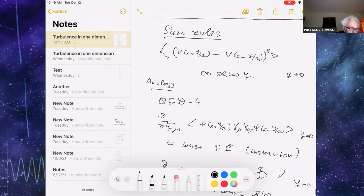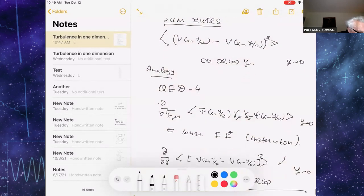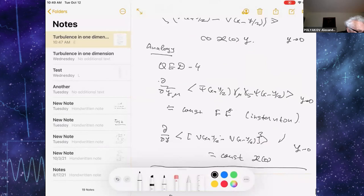I shall explain the meaning of this equation in a moment. And as you will see, the meaning of this anomaly in turbulence is the following.